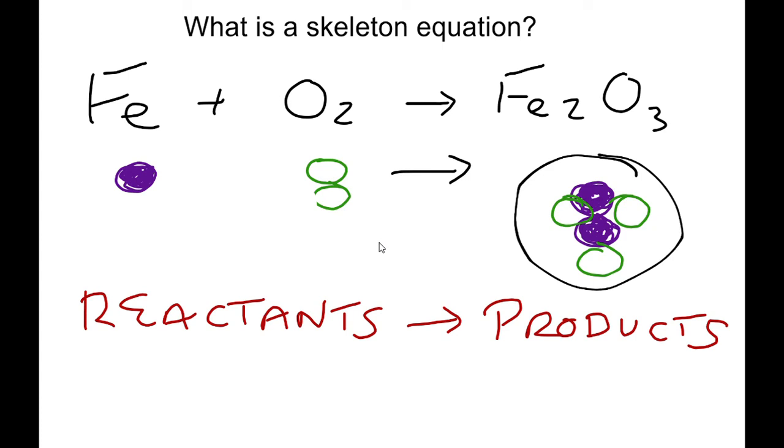Therefore, we would need the correct ratios or quantities of these atoms for this chemical reaction to truly occur. The skeleton equation written, therefore, only describes the correct particles of the reactants or products in their formula version. It does not show the correct ratios.